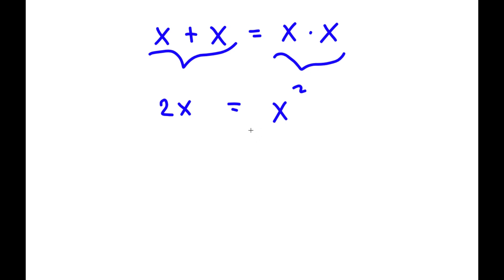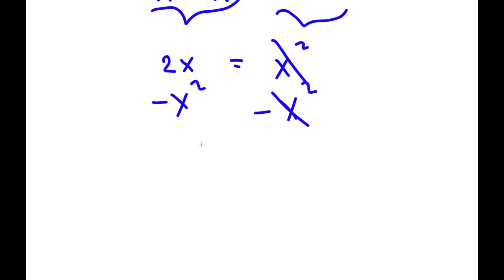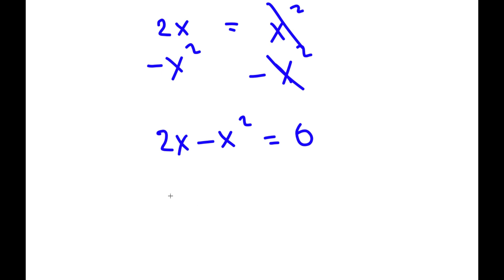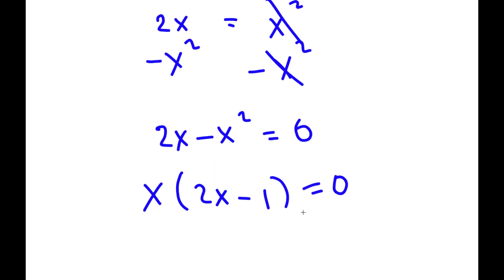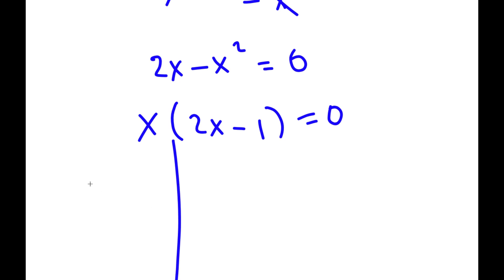Now I'm going to subtract x squared on both sides. So I have 2x minus x squared is equal to 0. From here, I'm going to factor out x. So I have x times 2 minus x is equal to 0. This gives me two equations: x is equal to 0, and 2x minus 1 is equal to 0.